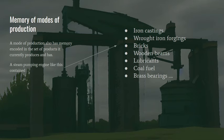For example, this steam pumping engine, an old Victorian steam pumping engine, contained iron castings, wrought iron forgings, bricks, wooden beams, lubricants, coal fuel, and brass bearings. So there are sub-components going into any given technology like this. And these sub-components depend on what is being produced at the moment.